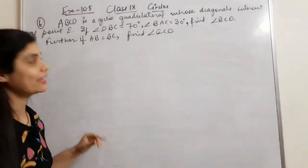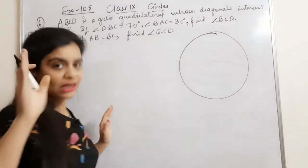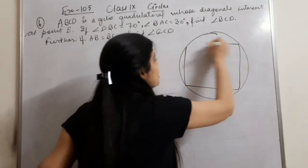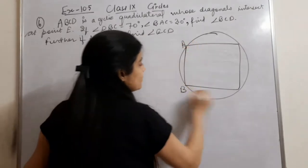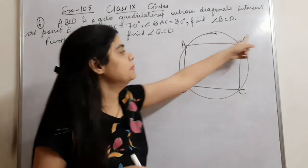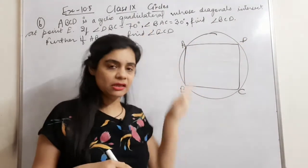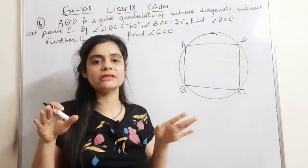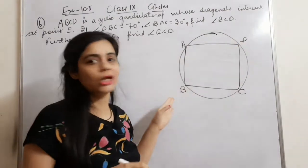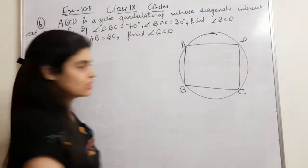A, B, C, D is a cyclic quadrilateral whose diagonals intersect at a point E. When you mark ABCD on the circle, mark them in series — either clockwise or anti-clockwise — so the sides don't cross each other.